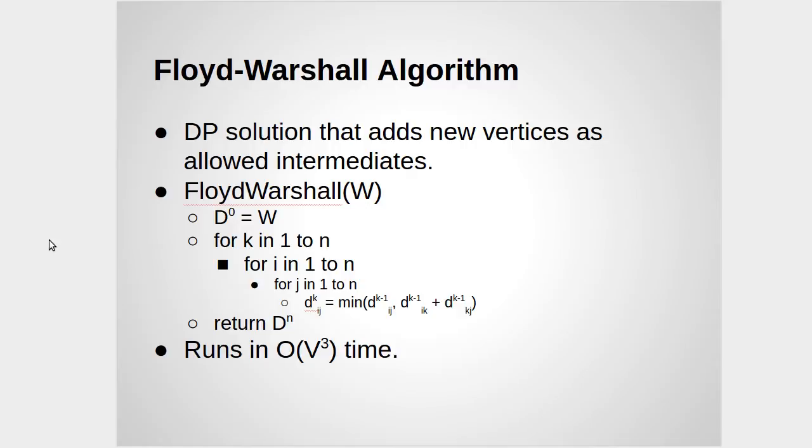And this will be the K index here. So what if I was allowed to go through vertex 1 on my path, and then what if I was allowed to extend that and go through vertex 2 on my path, and then extend that to go through vertex 3? And it's utilizing the previous data, because each time it builds off of what you could have done where you only went through the previous vertices.